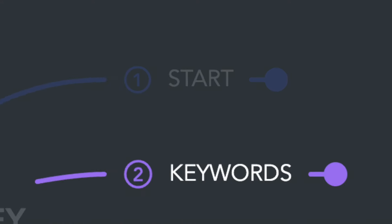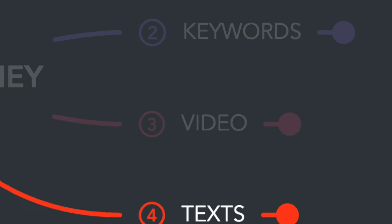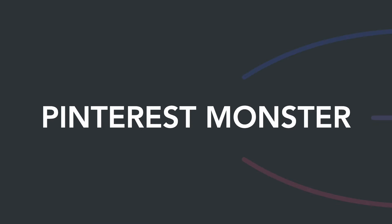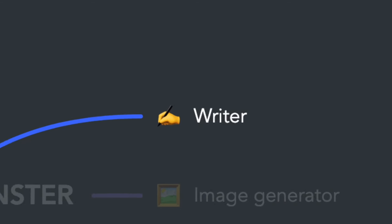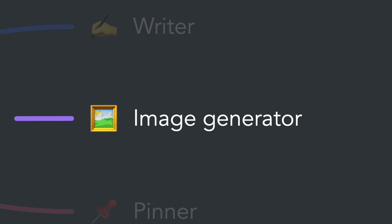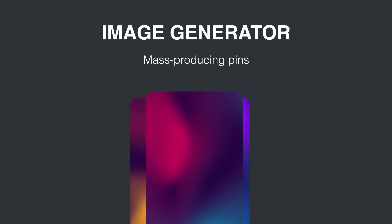Welcome to the fifth lesson of the Pinterest money course. Last time we began building our Pinterest monster and wrote the first module, the writer, which generates texts for our pins. Today we'll continue development and write the second module, the image generator, which will mass produce images for our pins.